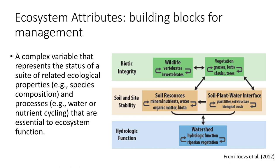The three attributes that generally define ecosystem health, particularly in rangelands, include biotic integrity, soil and site stability, and hydrologic function. In many cases, management is focused on maintaining or enhancing ecosystem attributes. However, because of their complex nature, ecosystem attributes can be very challenging to completely describe and difficult to measure.